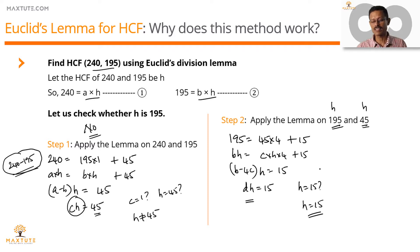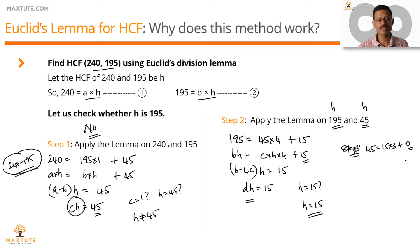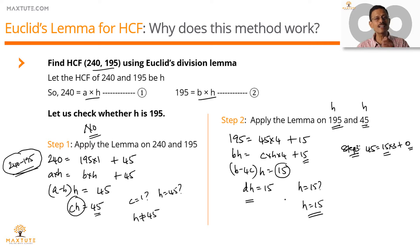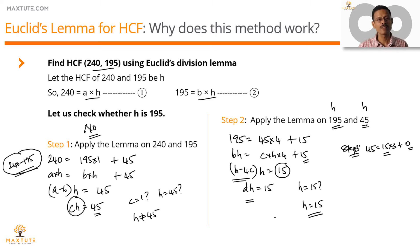In reality, we would have said the remainder in this step is not 0, gone to step 3, applied the lemma on 45 and 15, and found the remainder is 0 — so the divisor of that step is the HCF. The divisor of that step is the remainder of the previous step, which is the difference between those two numbers. This is why the method works: it relies on the fact that if two numbers A and B have HCF H, then the difference A − B will also have HCF H. That is the primary reason this method works.